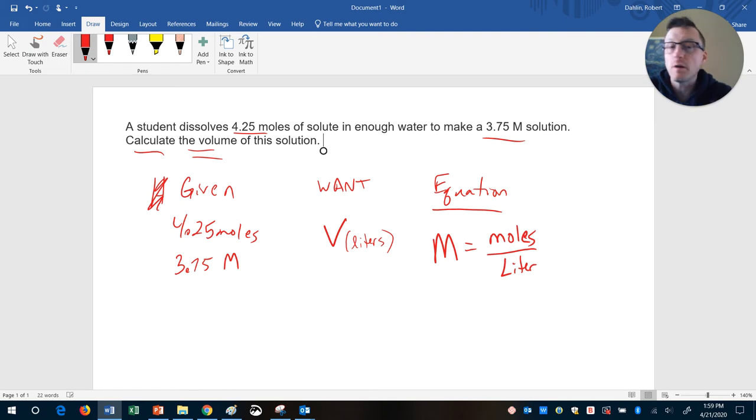So how do we do this? We simply plug in our numbers into the equation. We know 3.75 molarity equals 4.25 moles, and then the bottom here is our X, our liters. I'm going to put that in parentheses just to remind myself.